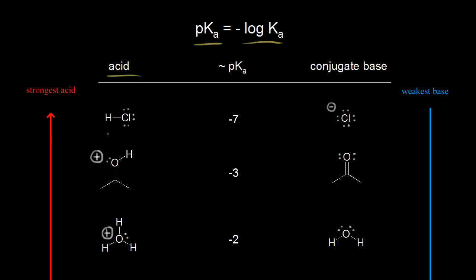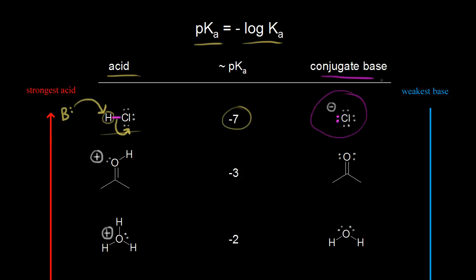For example, if our acid is HCl, the pKa of this proton is approximately negative seven. So if a base comes along and takes this proton, these electrons are left behind on the chlorine. The electrons in magenta come off onto the chlorine to form the chloride anion. So the chloride anion is the conjugate base to HCl.